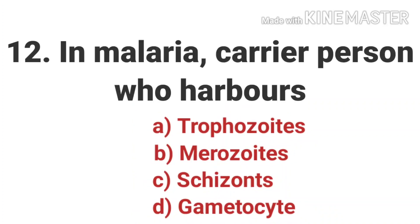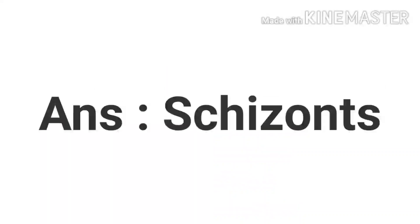The twelfth question is: in malaria, which form does the carrier person harbor? The options are Trophozoite, Merozoite, Schizonts, and Gametocyte. The answer is Schizonts. In malaria, the parasitic life cycle involves two hosts. During a blood meal, a malaria-infected female Anopheles mosquito inoculates Sporozoites into the human host. Sporozoites infect liver cells and mature into Schizonts, which rupture and release Merozoites. The answer is Schizonts.